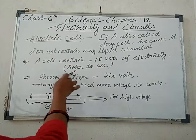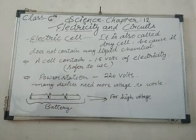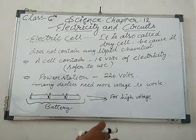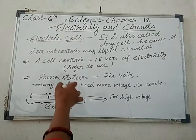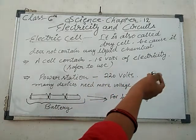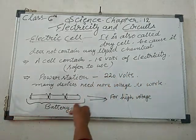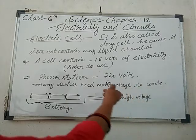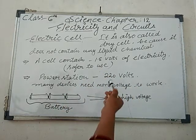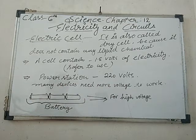But what about the power station? Power station means where the electricity comes from, where the electricity is generated. The capacity of power stations is much more voltage — approximately 220 volts is the capacity of the power station.